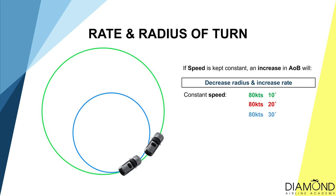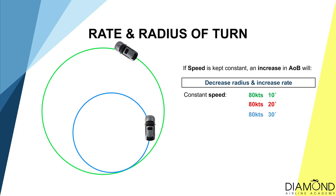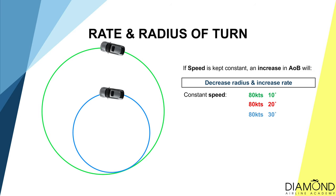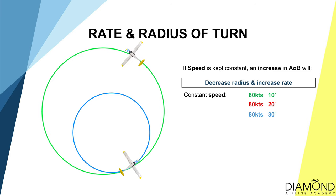Let's imagine we are all flying a plane and turning at different angles of bank while maintaining constant speed — similar to driving a car and turning at different steering angles. When turning just a little on the steering wheel, the rate is slower and the circle is bigger. When turning a lot more, the turn is faster and tighter. Applied to aircraft: at the same speed, banking at 10 degrees gives a lower rate of turn and higher radius; banking at 30 degrees gives a higher rate of turn and lower radius.